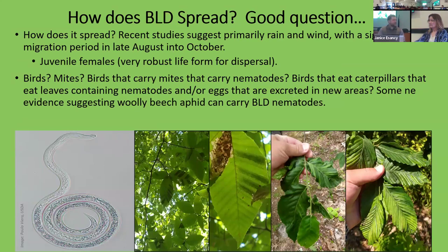How does beech leaf disease spread? That's another question we don't fully know the answer to, but a recent study suggests it's primarily rain and wind, with the main migration period in late summer to early fall — late August to October is when these nematodes distribute via wind and rain. The juvenile females are the most robust life form, the main overwintering form, and the ones being distributed late in the summer.